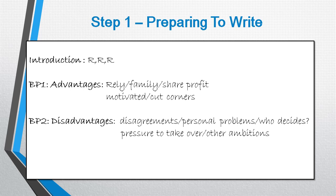For this type of essay body paragraph 1 is going to be the advantages — you could start with the disadvantages, it really doesn't matter. I've jotted down two ideas: firstly, families can rely on each other, they won't let each other down, and they only have to share the profit amongst themselves without paying employees outside of the family. The second advantage is that family members are likely to be more motivated than outside employees and are less likely to cut corners, so the work should be higher quality. I recommend having two different ideas so that you can extend your paragraphs. For the disadvantages I've also got two ideas: first, if family members disagree about how to run the business this can cause personal problems at home — and who is actually going to decide when two brothers own the business and want to do different things? The second disadvantage is that family members might feel pressure to continue or take over the family business when their parents pass on, even if they have other ambitions. For the conclusion, similar to the introduction, we know what we're going to write already. We're simply jotting it down so that you don't forget to include it — you must always write a conclusion, otherwise your structure is not complete and you will lose marks for coherence and cohesion.